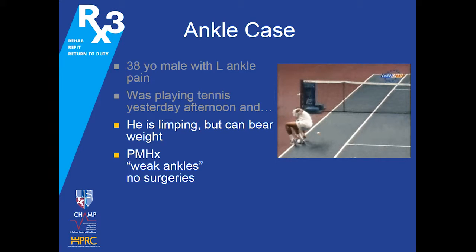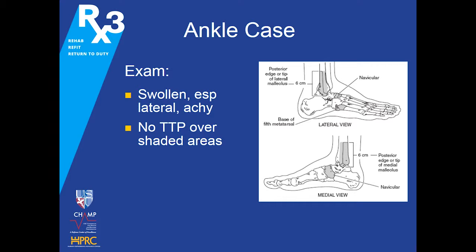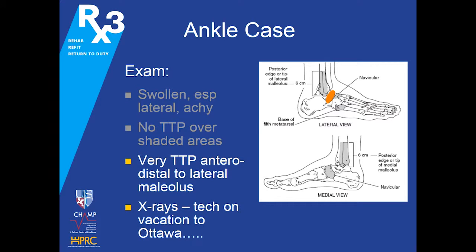What else do you know about this guy? He's limping, but he can bear weight. Past medical history significant for weak ankles — no ankle surgeries, no other musculoskeletal surgeries. On exam, the ankle is swollen, especially lateral, with some ecchymosis. He has some shaded areas painted all over his ankle but he's not tender over those. He is very tender over the anterior distal lateral malleolus — that orange circle painted on his ankle.